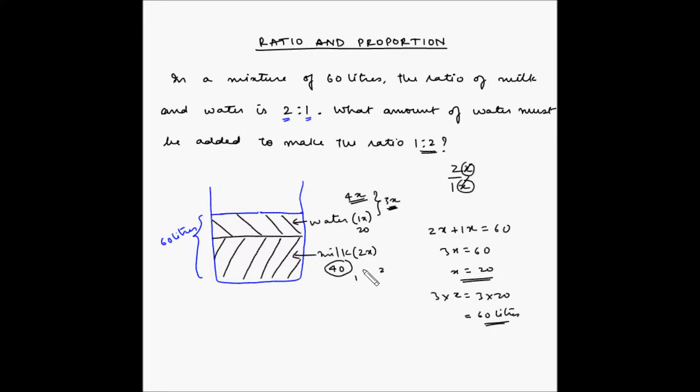Now, 40 has to be 1 part and water has to be 2 parts. So, 40 multiplied by 2 is 80. So, we should have 80 liters of water in this tank in order to make the ratio of milk to water as 1 is to 2. We already have 20 liters here. So, 80 minus 20 is 60 which we need to add.